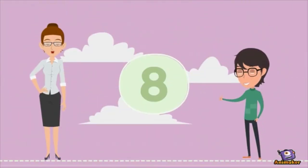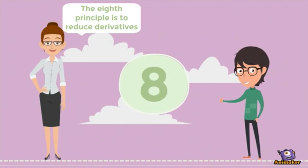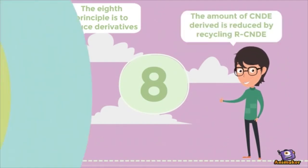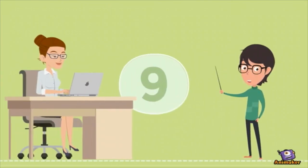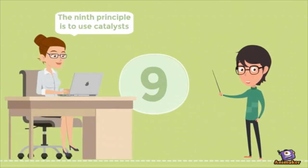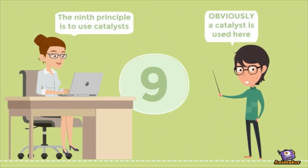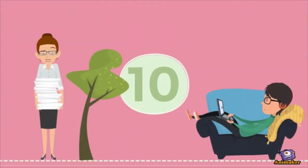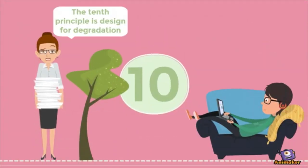The eighth principle is to reduce derivatives — the amount of CNDE derived is reduced by recycling the R-CNDE. The ninth principle is to use catalysts — obviously a catalyst is used here.